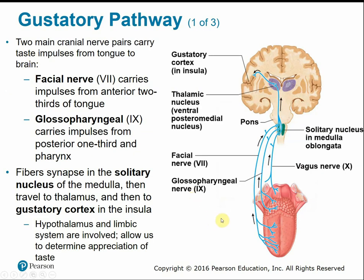Looking at the gustatory pathway from tongue to brain: two main cranial nerves transmit taste impulses. The facial nerve carries impulses from the anterior two-thirds of the tongue, and the glossopharyngeal nerve carries impulses from the posterior third. These nerve fibers synapse in the solitary nucleus of the medulla, which processes incoming taste information and passes it to the thalamus. The thalamus then reroutes those impulses to the gustatory cortex within the insular lobe.